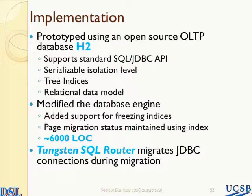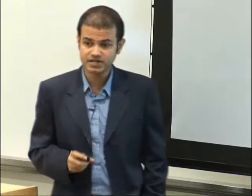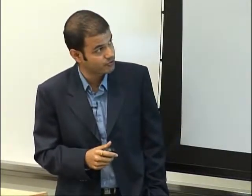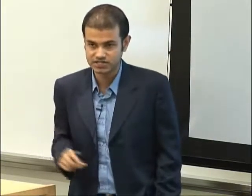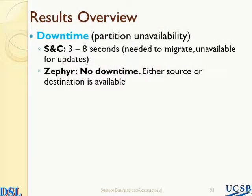So why isn't this simply a special case of a data sharing system? Actually, it is. The extension, which I didn't talk about, relies on data sharing with global and local lock managers to exchange the pages. But this becomes a data sharing system only during migration. In terms of implementation, the design was implemented in an open source OLTP database called H2, which provides all the bells and whistles of a classical OLTP database. We added support for freezing the indices as well as keeping track of ownership information — about 6,000 lines of code in the database engine. We used an open source SQL router to migrate connections from the source to the destination as a result of migration.